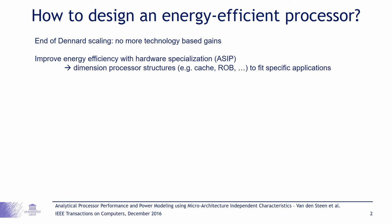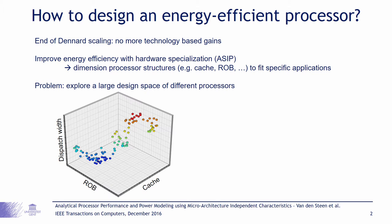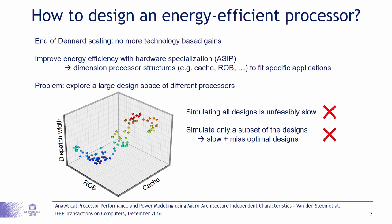One general consensus was that we could still gain performance by specializing processors and, for example, dimensioning the processor structures for specific sets of applications. However, designing application-specific processors generally requires exploring a large design space. Simulating such a design space would be extremely slow and using reduction techniques for either the applications or the design space might lead to missing optimal designs.